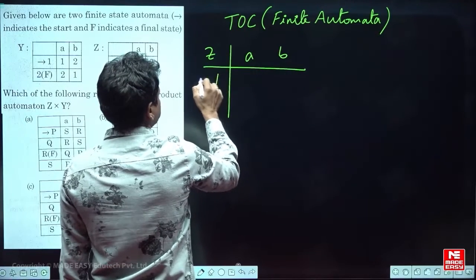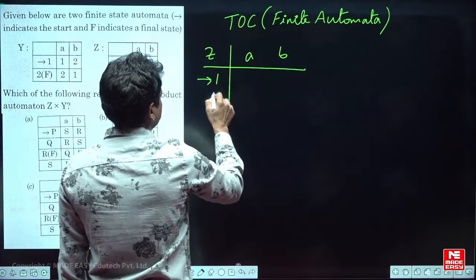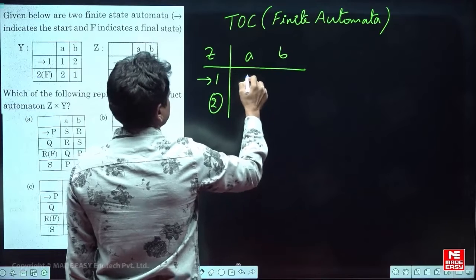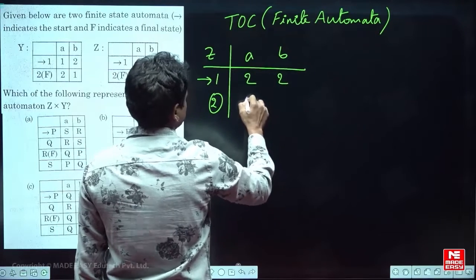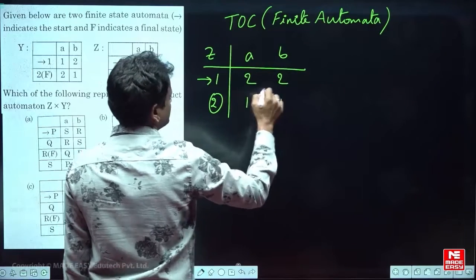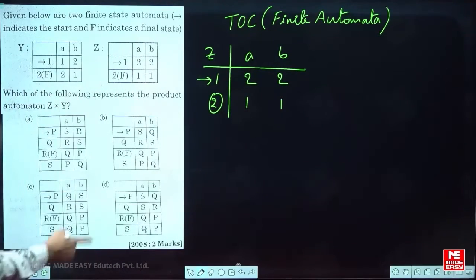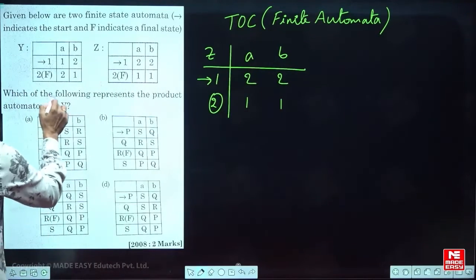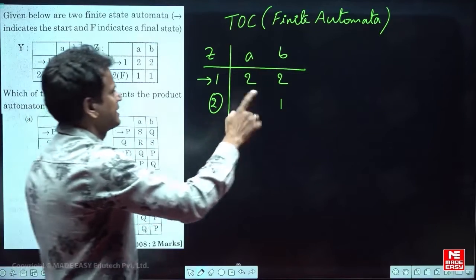In Z, 1 is the initial state and 2 is the final state. Because they have asked for Z cross Y, I am writing Z first.